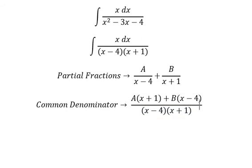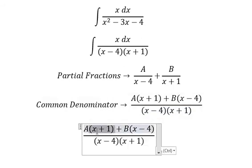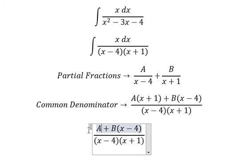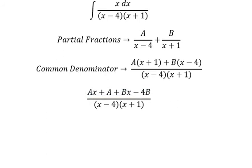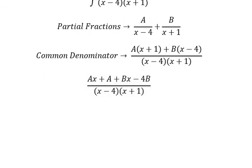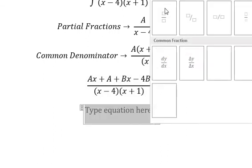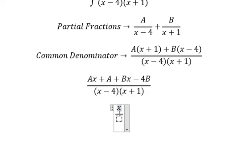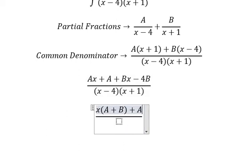Next we need to expand. We need to arrange based on the power of x. So we have x times A plus B, and we have A minus 4B over the denominator.